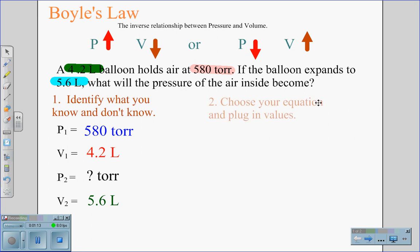Next, we're going to choose our equation and plug in the values. We're going to choose the equation P1V1 equals P2V2, which is the equation for Boyle's Law. Plugging in the values, 580 torr is our P1, 4.2 liters is our initial volume, we are looking for the second pressure, and we are using 5.6 as our final volume.